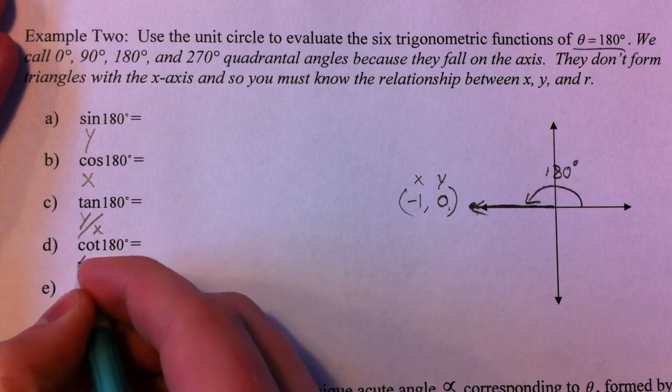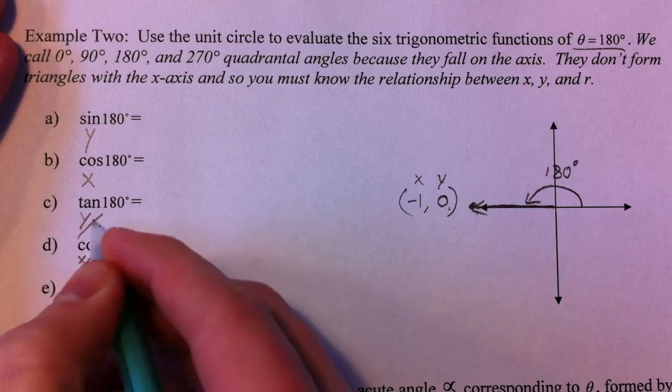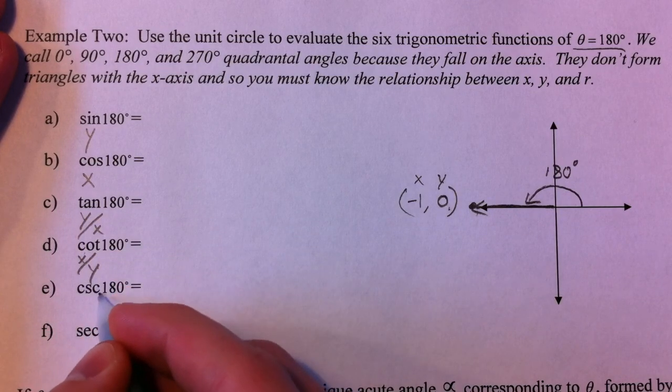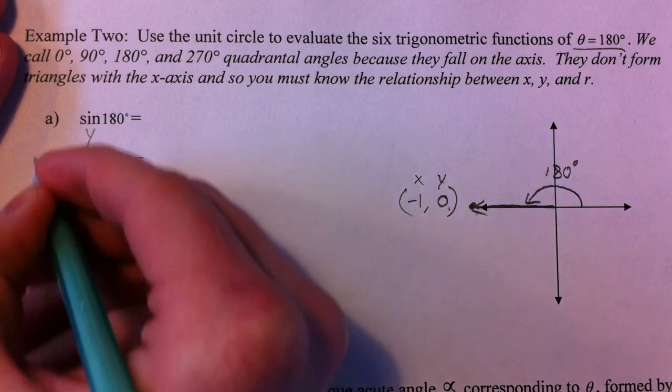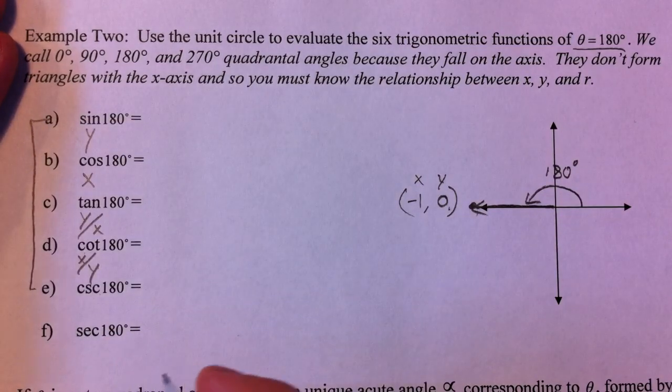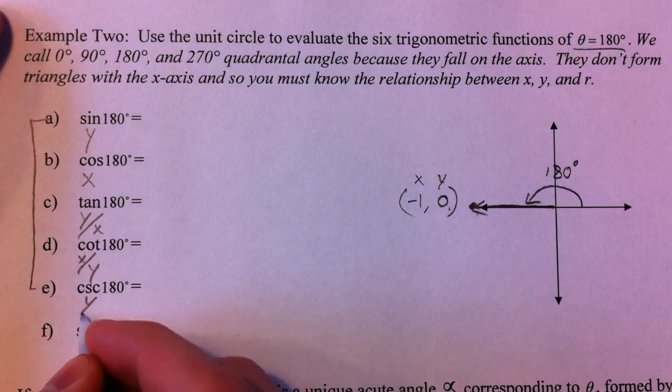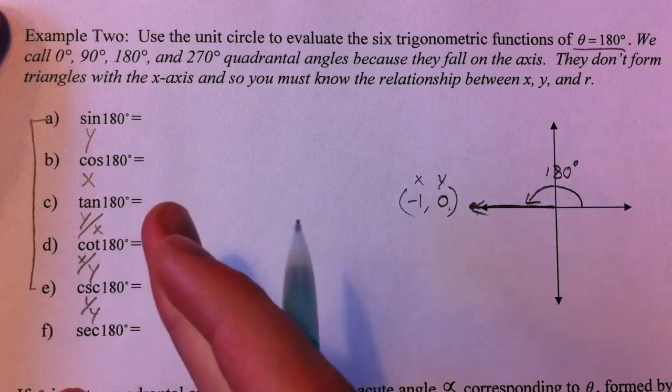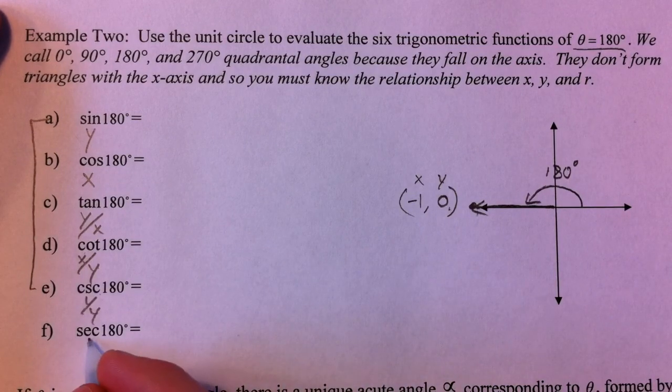Same way cotangent is going to be the reciprocal of the tangent, so it'll be x over y. Cosecant is related to the sine. Purposely switched them up here so we could get used to it. Reciprocal of the sine, 1 over the y, or just flip over your number. And secant, 1 over the x.